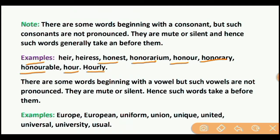There are some words beginning with a vowel but such vowels are not pronounced — they are mute or silent — hence such words take A before them. Examples: Europe — we say 'a European'; uniform, union, unique, united, universal, usual, etc.